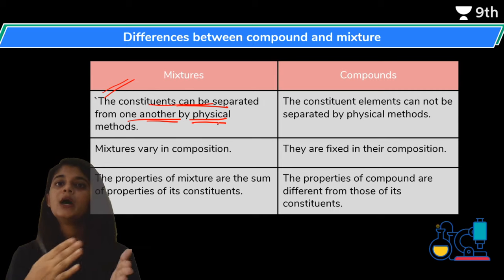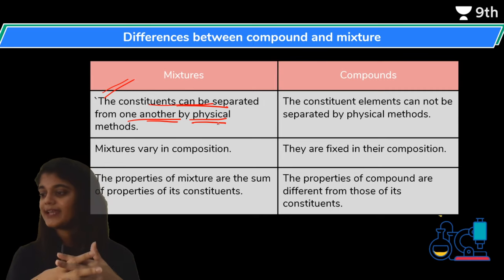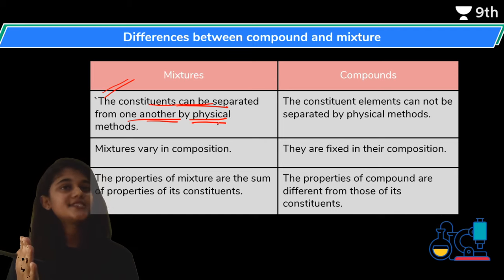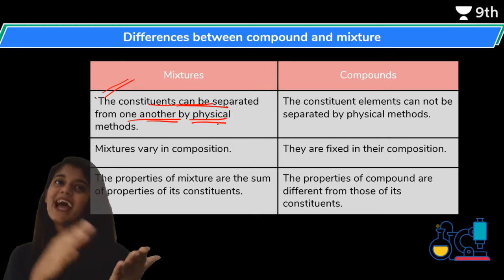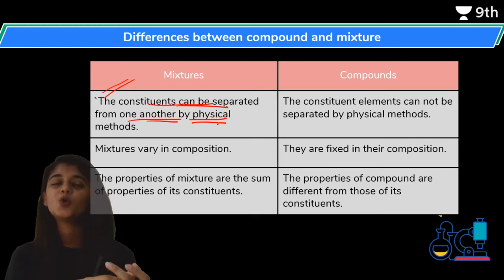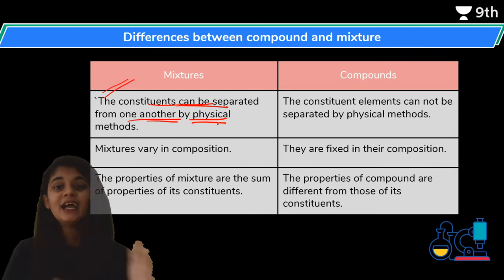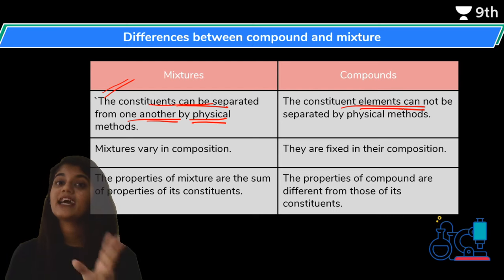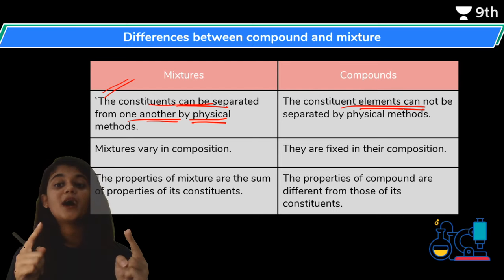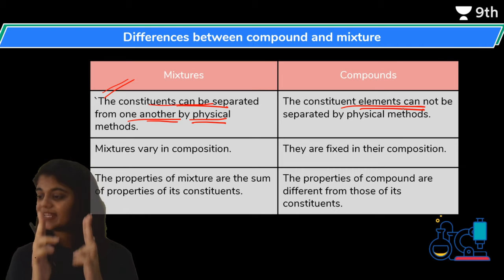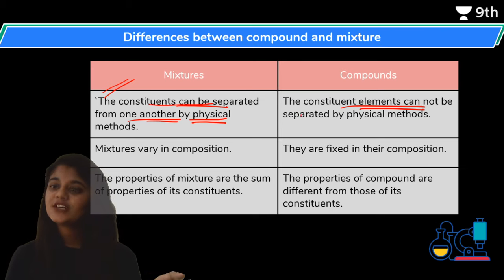The physical methods for separating mixtures include hand picking, sieving, and filtration - we will see each one in detail. But compounds, as I have already discussed, cannot have their constituents separated by any physical method. This is the first difference between the two.